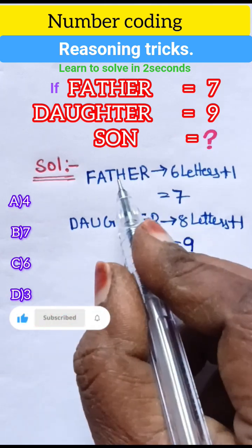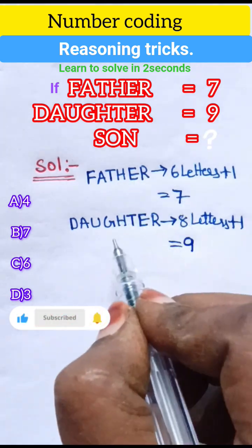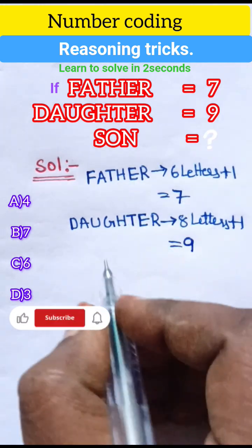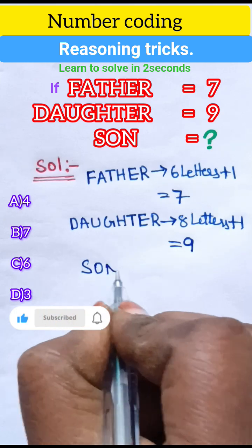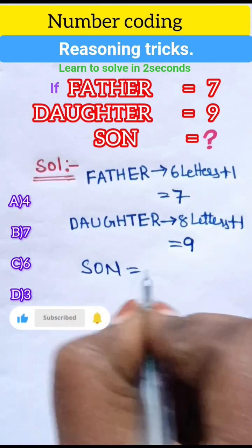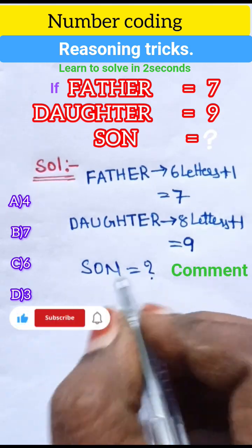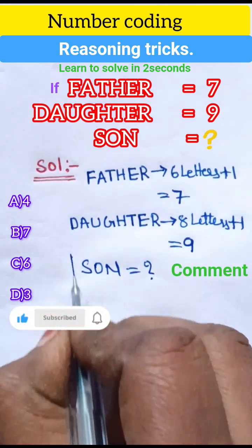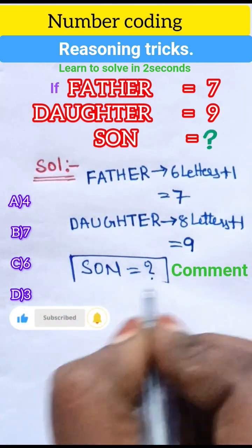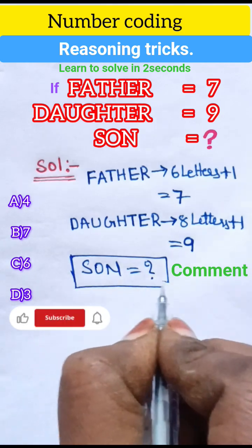So father 7, daughter 9 and son equals to question mark. So the value there is a question mark.